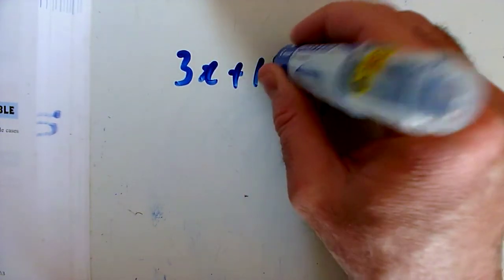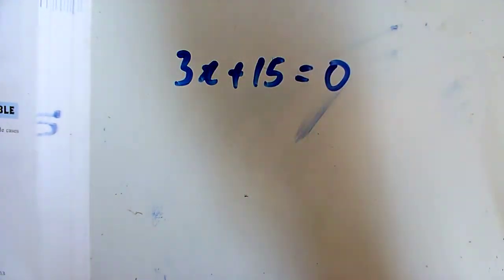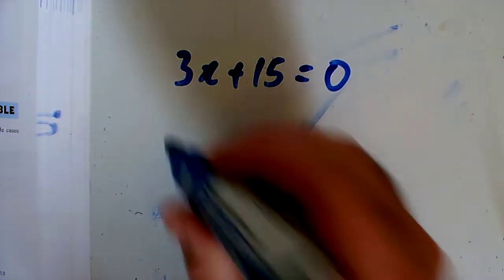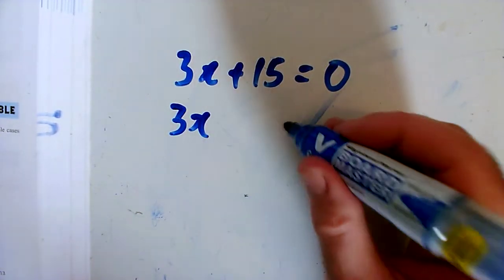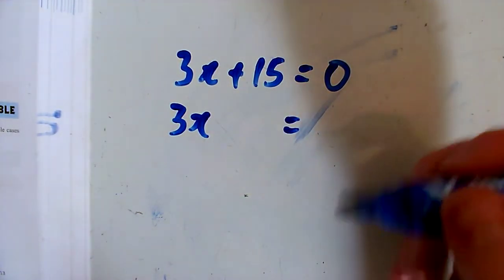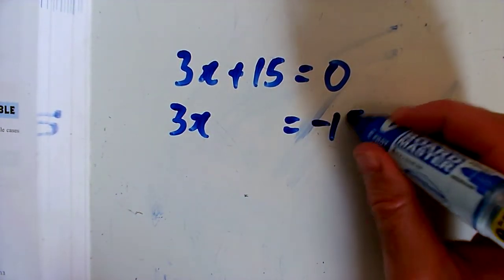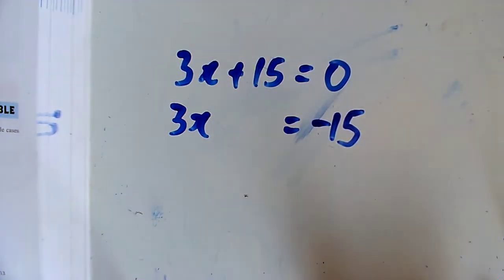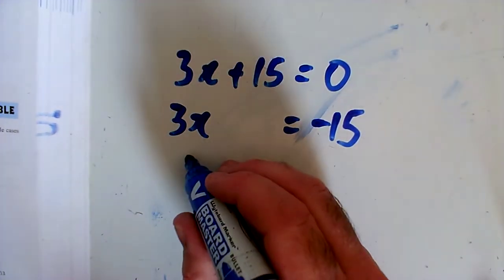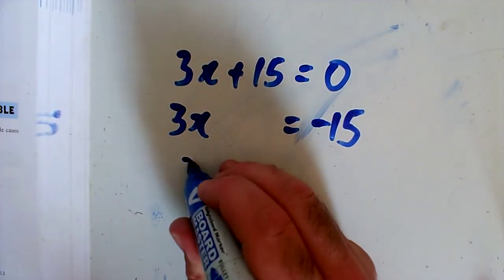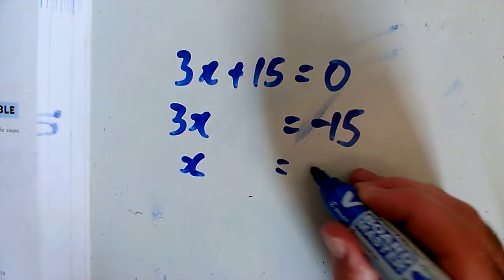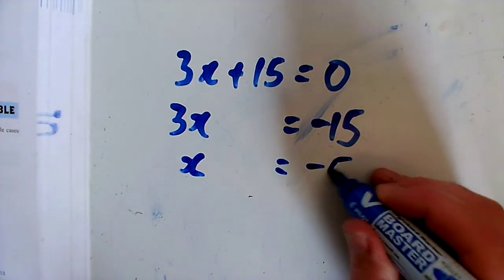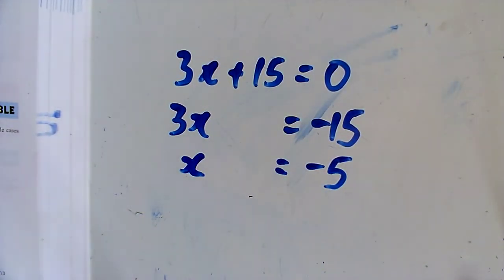Question N: 3x plus 15 equals 0. I'd like the bit with x on its own, so taking away 15 from both sides, 3x equals minus 15. I want to know what x is on its own, so dividing both sides by 3, x equals minus 5.